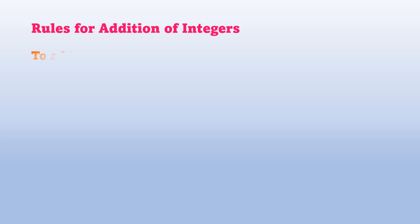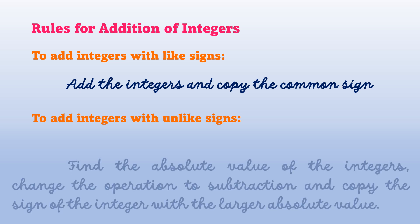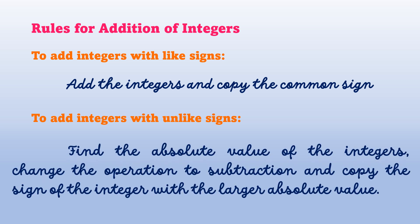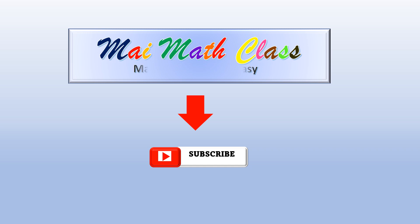We were able to derive the rules for addition of integers. To add integers with like signs: add the integers and copy the common sign. To add integers with unlike signs: find the absolute value of the integers, change the operation to subtraction, and copy the sign of the integer with the larger absolute value. Thank you for watching my math class, Mathematics Made Easy. Don't forget to click like and subscribe. Thank you and see you next video.